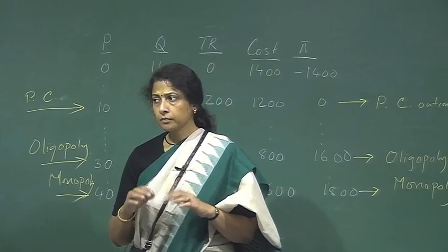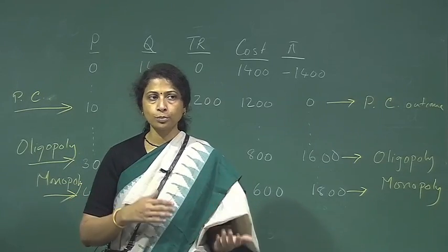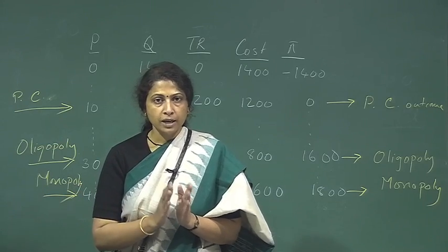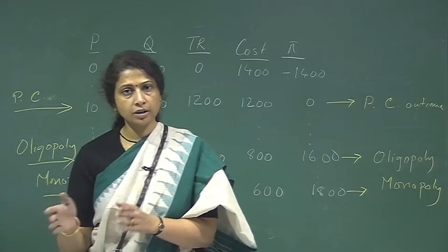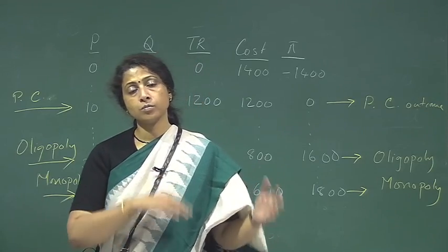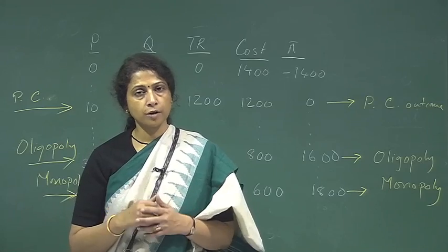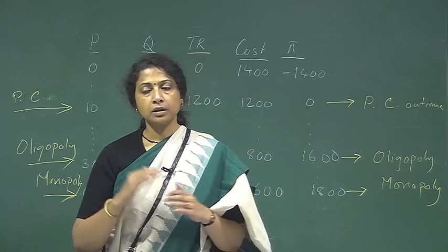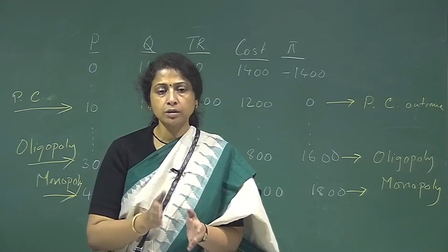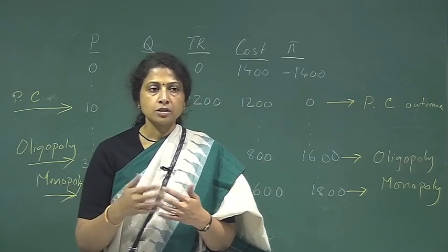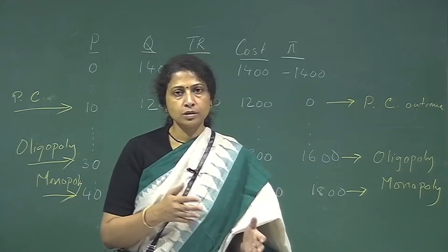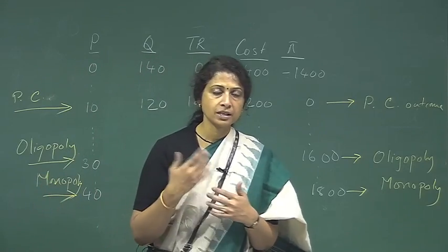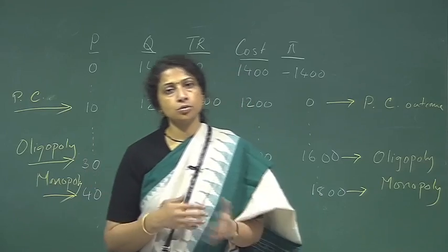Although we have theoretically developed various models — competition, monopoly, monopolistic competition, and oligopoly — and tried to make distinctions between different market structures with demand curves, marginal cost, and equilibrium output, in reality the demarcation between market structures is quite grey. It is not black and white whether a firm is oligopolistic or monopolistically competitive. Even if there are few firms, they can behave like a monopoly. All these sorts of situations are possible in a market.